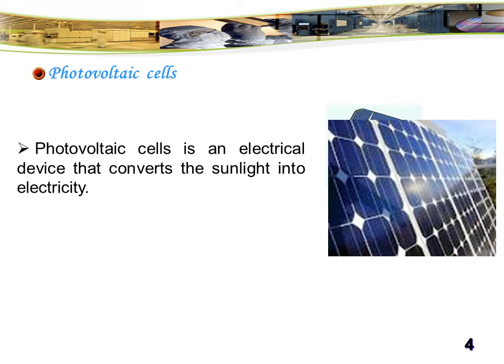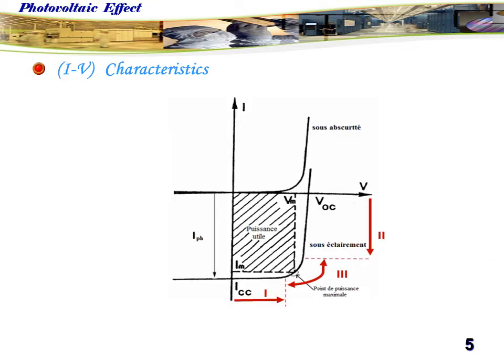Photovoltaic cells is an electrical device that converts the sunlight into electricity. This is the I-V characteristic of solar cells. It behaves like a current generator in the first zone, voltage generator in the second zone, and we can find the maximal power in the third zone.